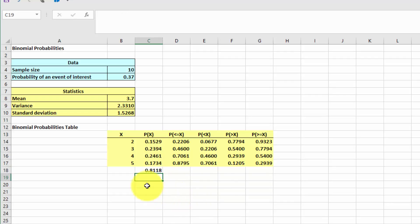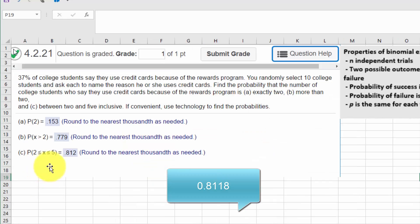And that gives us the probability inclusive of from 2 to 5. The probability of getting 2 or 3, 4, and 5 is 0.818. And I think that is the answer there. 0.818 rounded gives you 0.812.